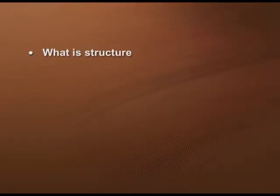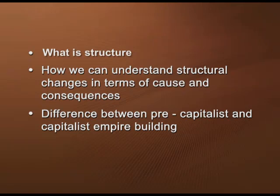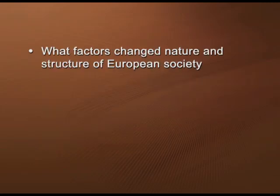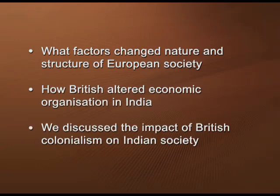To summarize, we began by discussing what a structure is and how structural changes can be understood in terms of their causes and consequences. We discussed the difference between pre-capitalist and capitalist empire building and the associated concept of capitalism. We also discussed what factors changed the nature and structure of European society and led to the establishment of modernity. Subsequently, we discussed how the British altered economic organization in India and the impact of British colonialism on Indian society, economy and polity. In the next part of this chapter, we shall discuss the processes of urbanization and industrialization in detail.